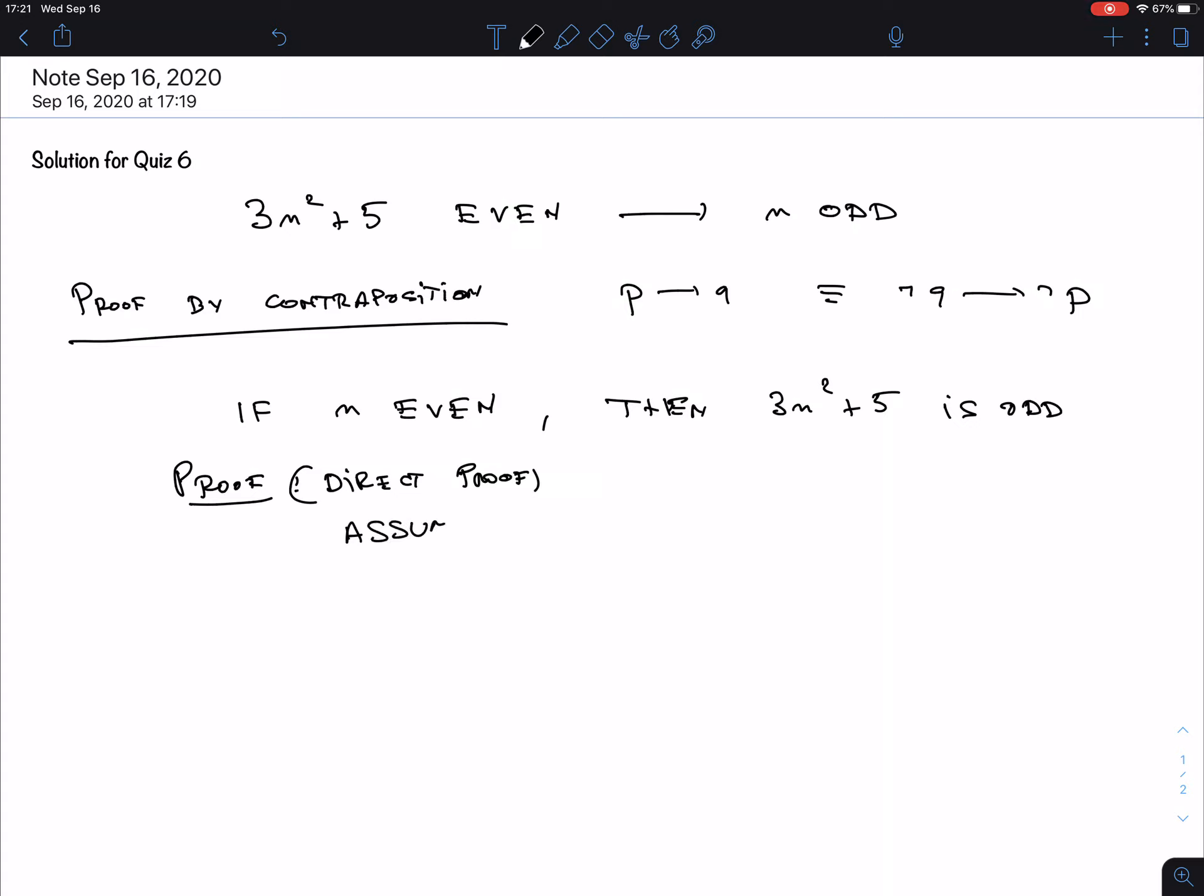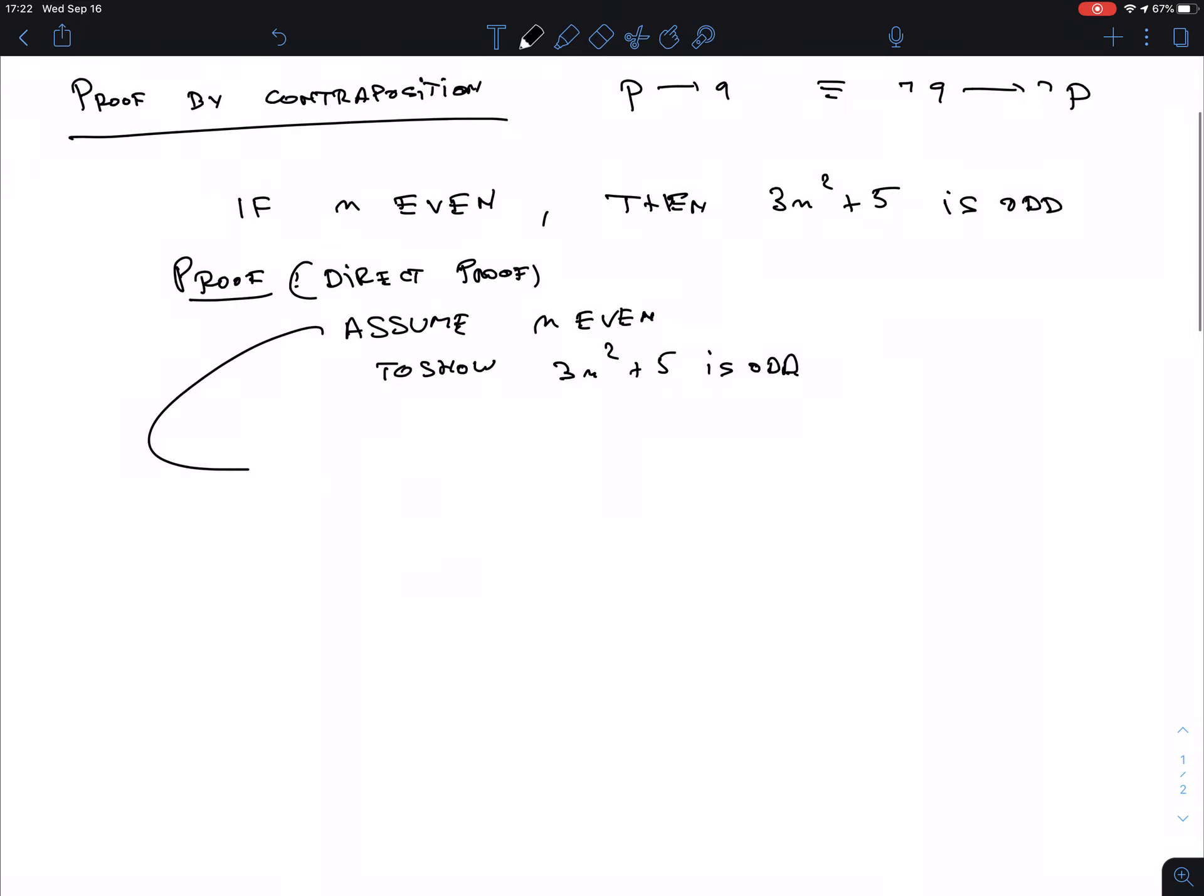Assume n is even, and then show that 3n squared plus 5 is odd. So as soon as n is even, we can work with that because we know how an even number looks like. That means there is a natural number K so that n is 2 times K, and now I have to find something